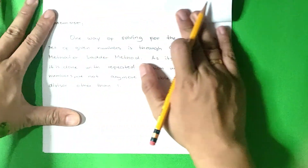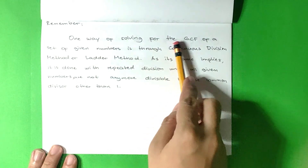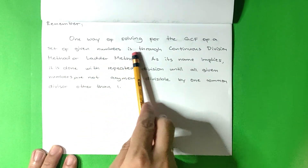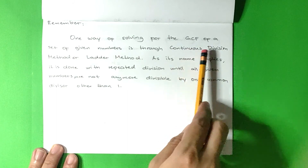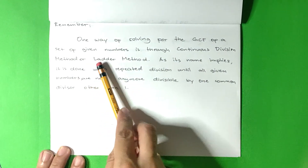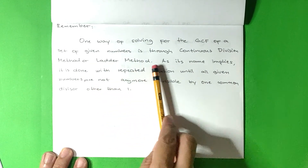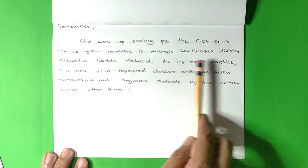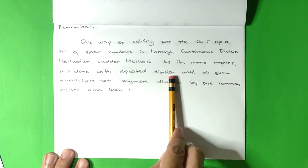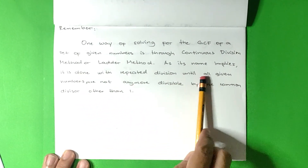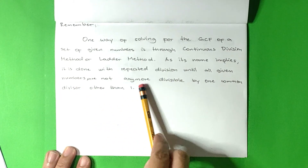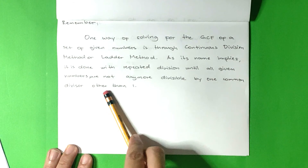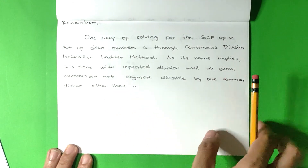Remember, one way of solving for the GCF of a set of given numbers is through the continuous division method, or ladder method. As its name implies, it is done with repeated division until all given numbers are no longer divisible by one common divisor other than one.